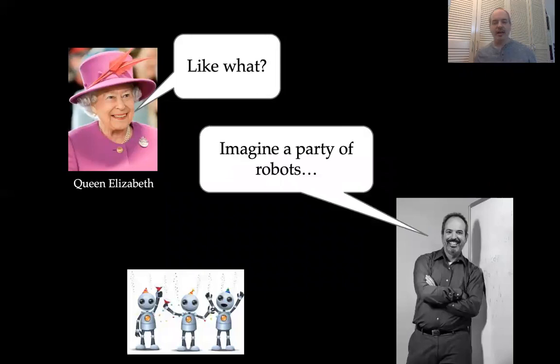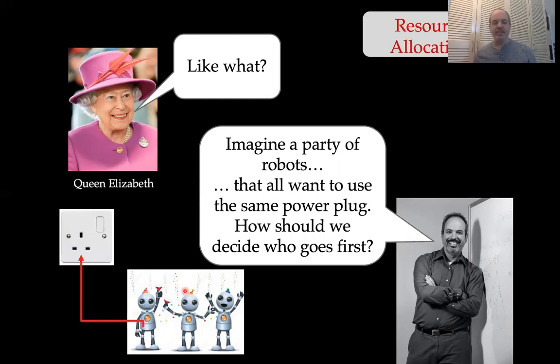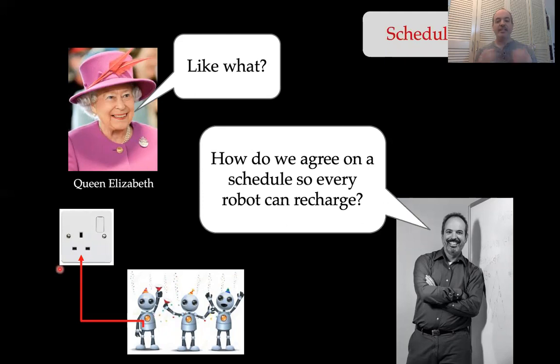Imagine I'm at a cocktail party and Queen Elizabeth walks up and says, so what do you do? And I answer: I do distributed algorithms. That's not the most useful response. So I might say something like, I invent instructions, recipes for how computers can coordinate to accomplish some goal. She probably knows what a computer is. But you still might get a confused look. So, we were just talking about parties — imagine a party of robots. Here are little robots throwing a little party. And imagine that these robots all want to use the same power plug over here. We have to decide which of them should get to use the power plug first.